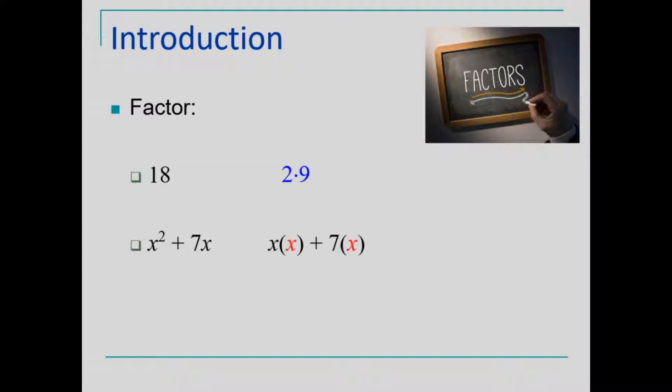For x squared plus 7x, if we use the distributive law in reverse, we have the basis of a process called factoring.